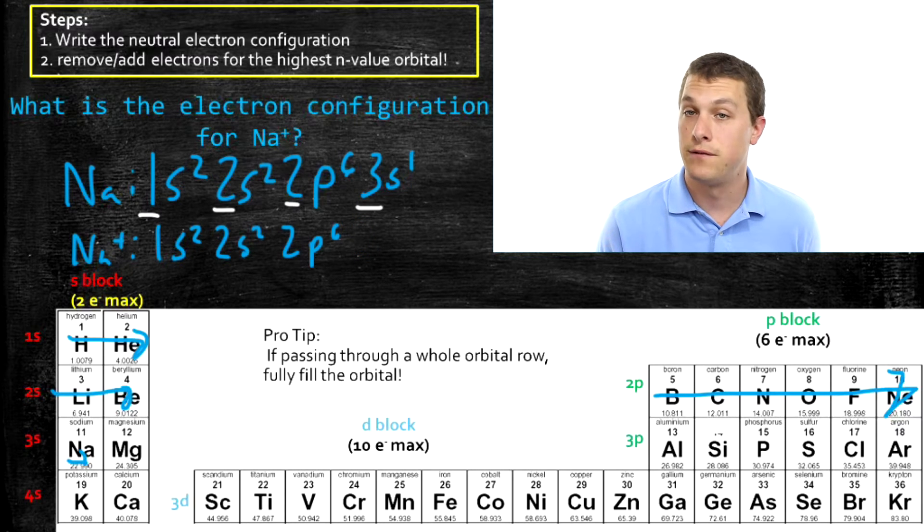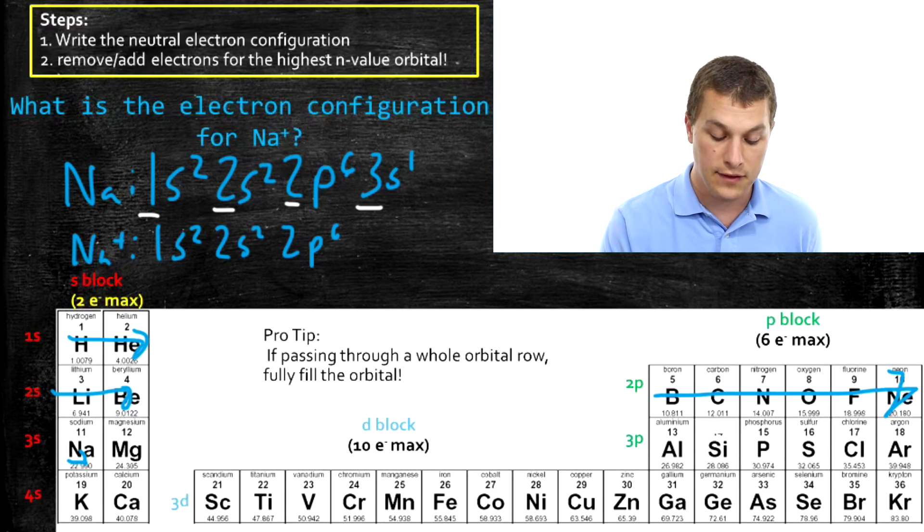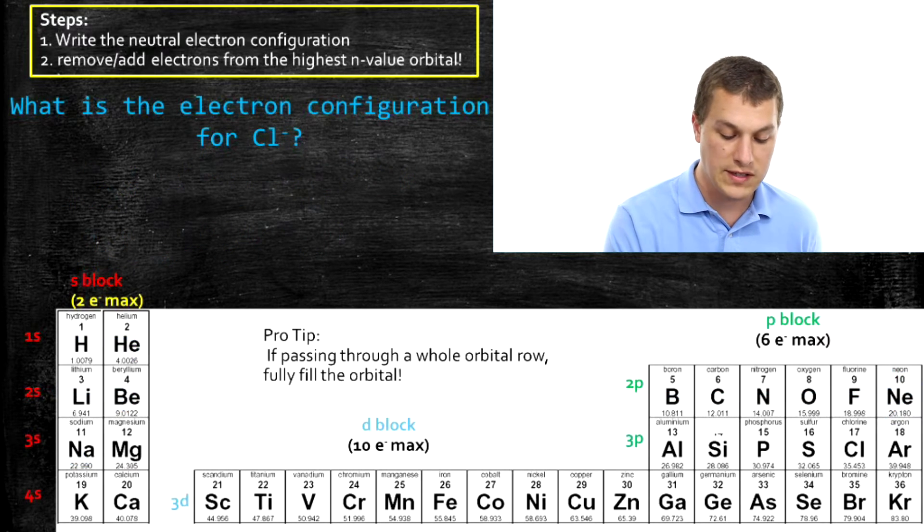Notice once again, it has a full P orbital. And that's again typical for these ions. Okay, now let's do chlorine. What does that look like?